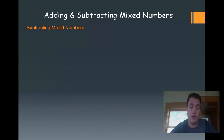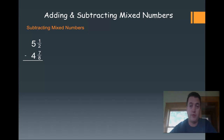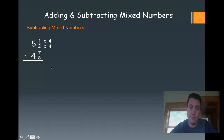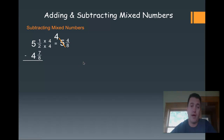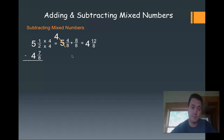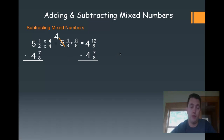Now let's look at subtracting mixed numbers. When we subtract, sometimes we're going to have to do multiple steps, so just be patient with yourself. I've got 5 and 1 half minus 4 and 7 eighths. Since 2 is a factor of 8, I multiply the numerator and denominator by 4, giving me 5 and 4 eighths. But 4 eighths cannot take away 7 eighths, so I'm going to have to borrow. I borrow from the 5, making it a 4, and add 8 eighths to the 4 eighths for a total of 4 and 12 eighths. Now 12 take away 7 is 5, giving me 5 eighths, and 4 take away 4 is 0. So my answer is 5 eighths.